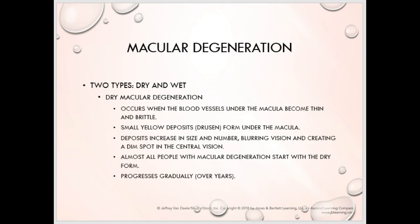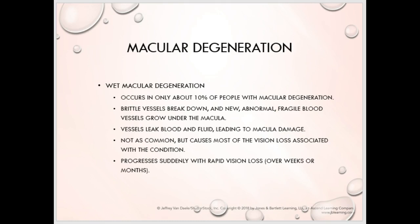Almost all people with macular degeneration have the dry form. It can progress into a wet form, which is very rare — only about 10% of people. With wet, those brittle vessels break down and new abnormal fragile blood vessels grow under the macula. There can also be leakage from those vessels, putting pressure on the macula and damaging it. We'll show visual representations of both in our practice cases.